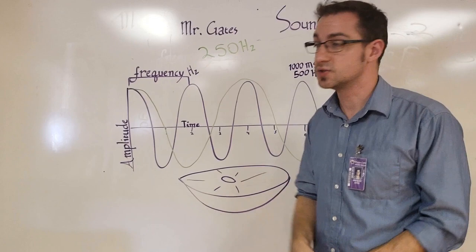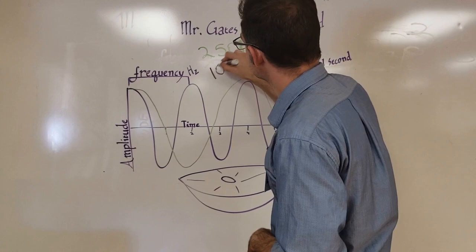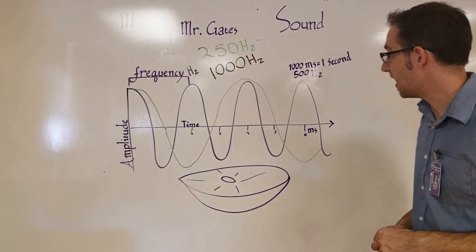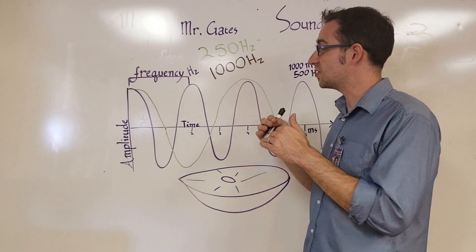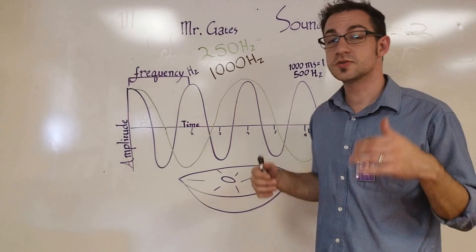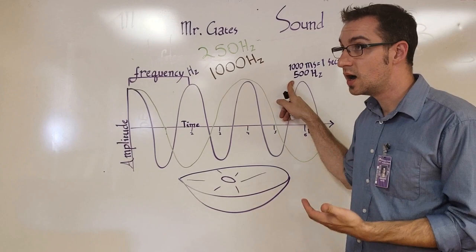The same is true when we multiply by two. If we take our 500 Hertz, multiply it by two, and we get a thousand Hertz, that note is going to be one octave higher than our 500 Hertz note. So it's going to sound like the same pitch class, it's just going to be one octave higher. So let's listen to what that would sound like. Here's the 250 Hertz, the 500 Hertz, and a thousand Hertz.